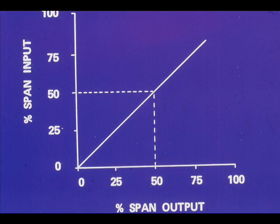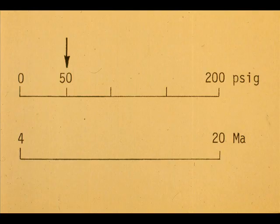The output span for the range 4 to 20 milliamps is 16 milliamps. The percent of span output versus the percent of span input to the transmitter is linear. Therefore, 50% span input should give 50% of span output.